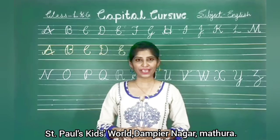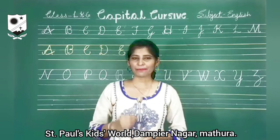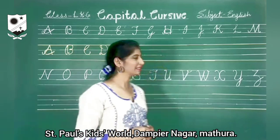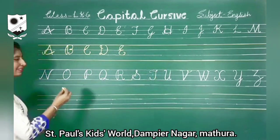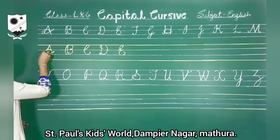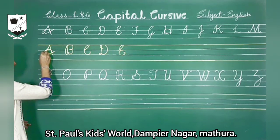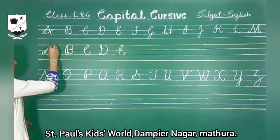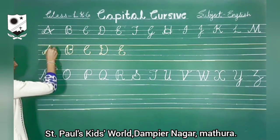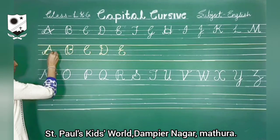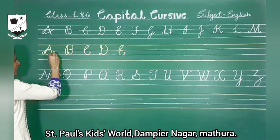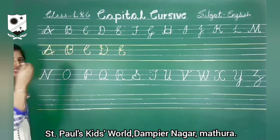I hope you have learned capital A to E. Let's revise again. Look here. Let me start from the second line. Plant and then again slanting line. Go up, take a big round, have a curve and leave it.